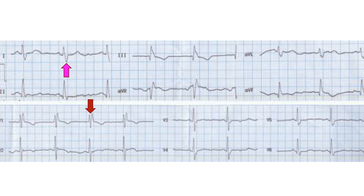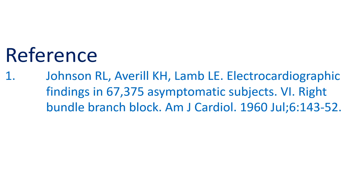The IRBBB pattern can occur in atrial septal defect, Ebstein's anomaly of the tricuspid valve, and acute pulmonary embolism.